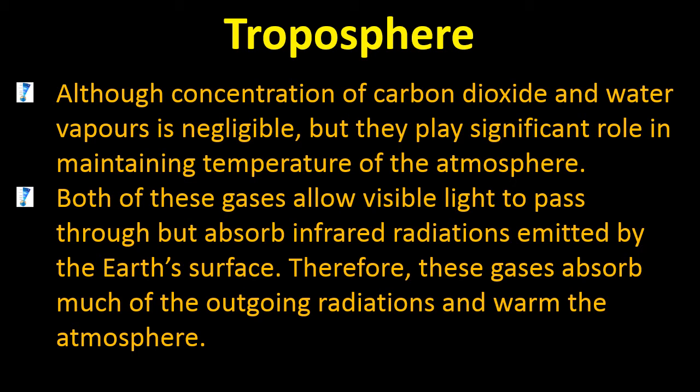What would happen if there were no carbon dioxide in the atmosphere? Everything would be frozen — too cold to survive on Earth. Carbon dioxide is a gas which absorbs heat from the Sun and traps warm air, keeping the temperature of the Earth constant for life. That's why carbon dioxide is very important, although it is present in negligible amounts. Its concentration is 0.03% — a very small amount, but very necessary.